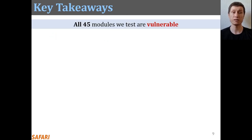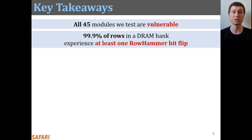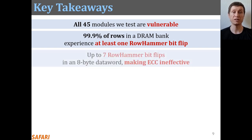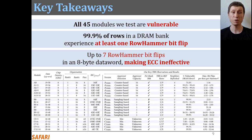In summary, we find that all 45 modules we test are vulnerable to our neural hammer access patterns. Almost all the rows in the DRAM bank experience at least one rowhammer bitflip, and a single 8x data word experiences up to seven rowhammer bitflips, making ECC ineffective against our rowhammer access patterns. Our paper has detailed descriptions and analysis of each of the 45 modules and we encourage you to read it and attend our full talk.